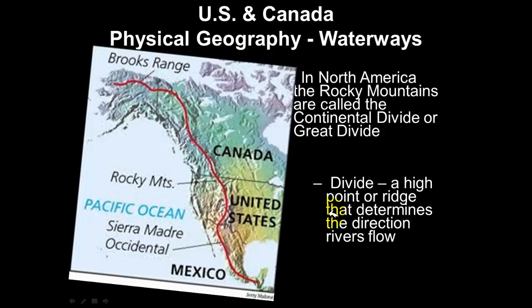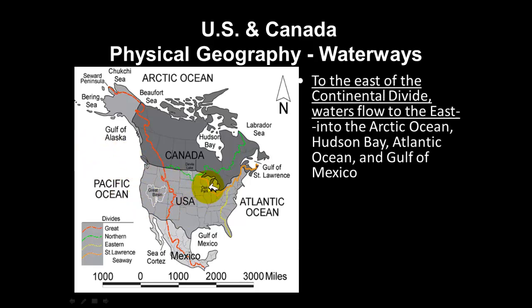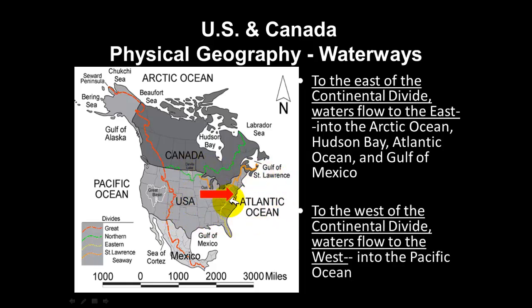A divide is a high point or set of ridges that determines the direction that rivers flow. All points east of the Continental Divide have waters that flow eastward — into the Arctic Ocean, the Hudson Bay, the Atlantic Ocean, or the Gulf of Mexico. To the west of the Continental Divide, all waters flow west into the Pacific Ocean. Understanding where the divide is helps you understand the direction of waterways across the continent.